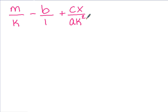For this one we have m over k minus b of course over 1 plus cx over ak squared. Go ahead and try that one on your own. We're going to check it in class. Keep in mind finding the common denominator and then getting your new numerator. If you need to go ahead and pause the video before going on to the next part.